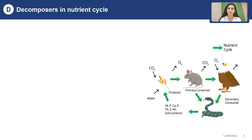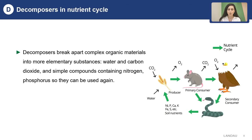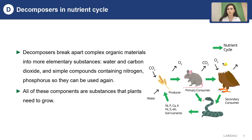We previously mentioned the importance of decomposers in the ecosystem. Now let's see the importance of decomposers in the nutrient cycle. Decomposers break down complex materials into simpler inorganic materials so that plants and other primary producers can use them for growth and reproduction. When organisms die, these organic materials become simple enough to be absorbed by plants, and later plants will be eaten by primary consumers, and so on, as energy flows through the food chain.